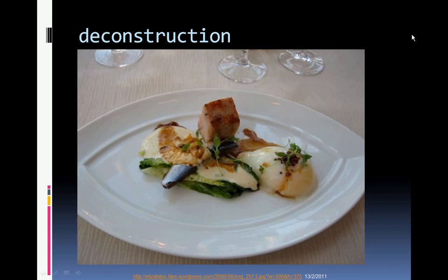Here's an example of deconstruction as a way to look for creative inspiration. In this recipe we can see a Caesar salad where the bacon is placed here with pork belly, the anchovy is a fresh grilled anchovy, there is cold lettuce underneath, a poached egg, and the Caesar dressing incorporated into the dish. But at the same time it's all been deconstructed into the larger components of the original dish.